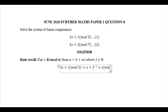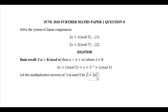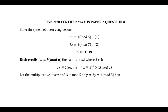We need to look for the multiplicative inverse of 3 in mod 5. Let that inverse be y. The multiplicative inverse of 3 in mod 5 means we need a number such that 3 times that number gives 1 in mod 5. Starting with 1: 3 times 1 is 3, which is not 1 mod 5. Trying 2: 3 times 2 is 6, and 6 is the same as 1 mod 5. So y equals 2.